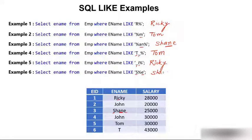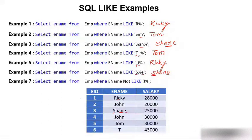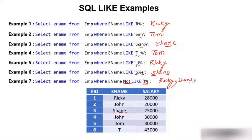The last example uses NOT LIKE: WHERE ename NOT LIKE 'J%' — we don't want names starting with 'J'. The result includes Ricky, Shane, Tom, and T — four names that do not start with 'J'. This concludes the theoretical part of the LIKE operator.